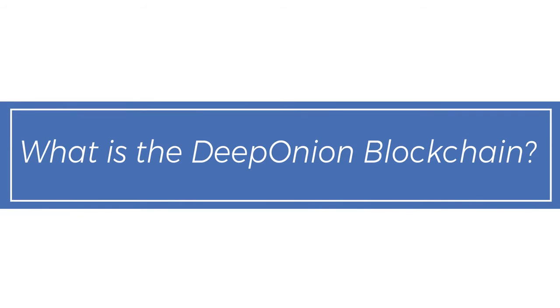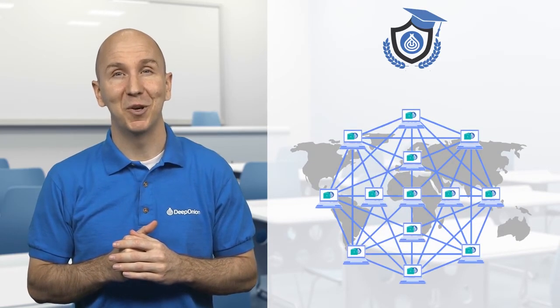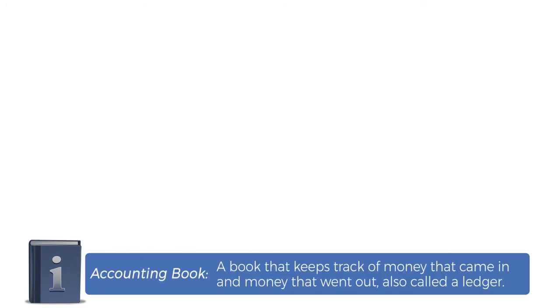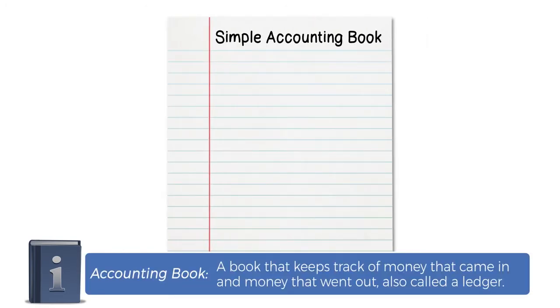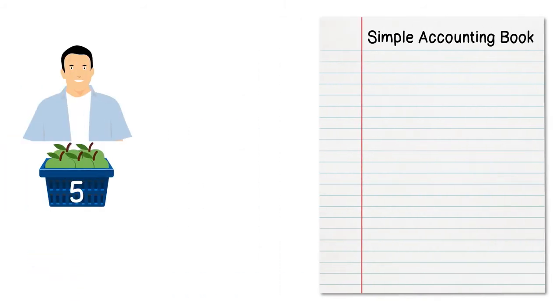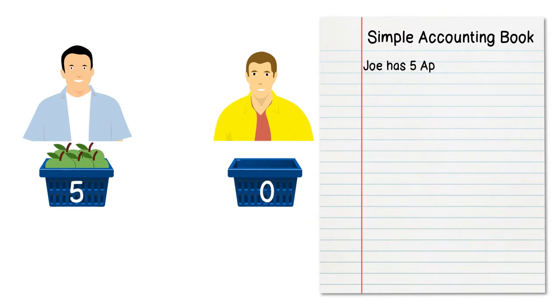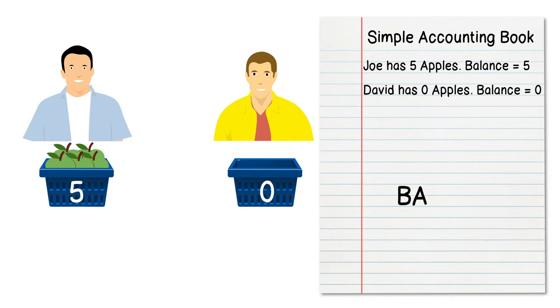What is the DeepOnion blockchain? Blockchain is a technology that allows people to store digital information on computers. DeepOnion has its own blockchain, which we call the DeepOnion blockchain. It's similar to a public accounting book that contains the incoming and outgoing of money. For example, Joe has five apples and David has zero apples. It also stores how much money each user holds, called a balance.